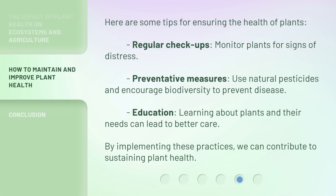Here are some tips for ensuring the health of plants. Regular checkups — monitor plants for signs of distress. Preventative measures — use natural pesticides and encourage biodiversity to prevent disease. Education — learning about plants and their needs can lead to better care. By implementing these practices, we can contribute to sustaining plant health.